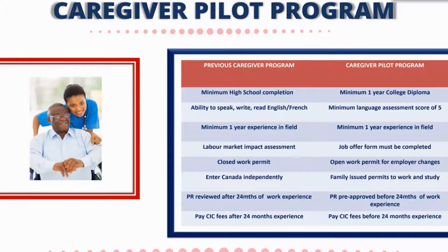Another change is pre-approval versus having to wait at the end. When you submit your application from the onset, you'll know if you're pre-approved for permanent residency. Once you've finished 24 months of work experience and submit the transition, getting your permanent residence is a lot faster. Prior to this, it may have taken over a year to two years. Now they're looking at around six months or less.